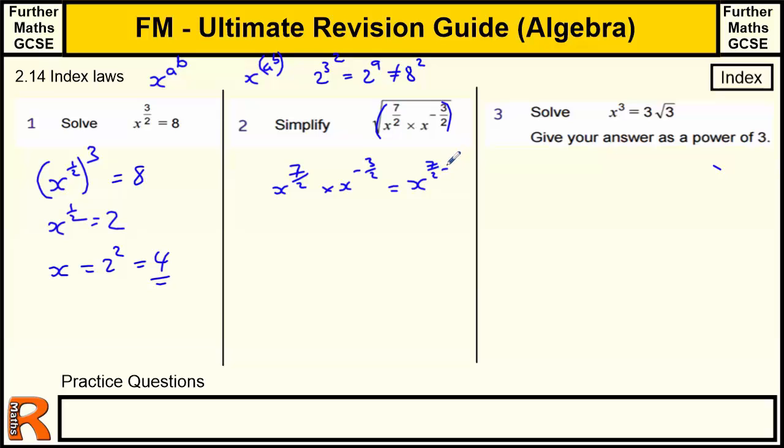So we get x to the power of 7 over 2 plus minus 3 over 2. So 7 over 2 plus minus 3 over 2 is the same as 7 take away 3, which is 4 over 2. And 4 over 2 is just 2. So it's x squared. So we've got the square root of x squared, and that's just going to be x.